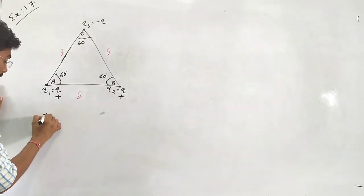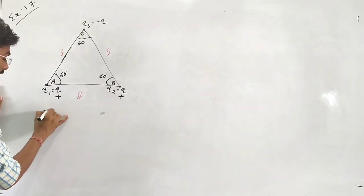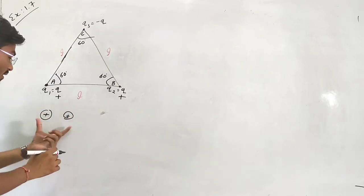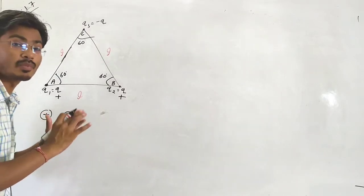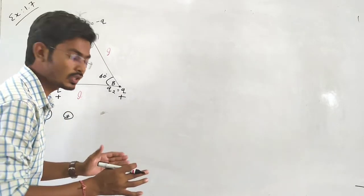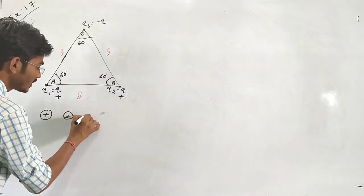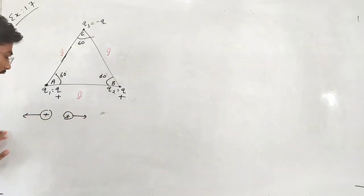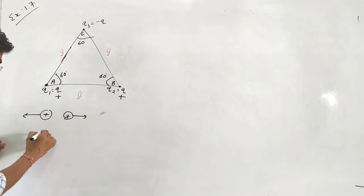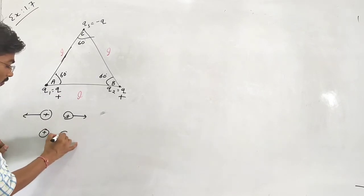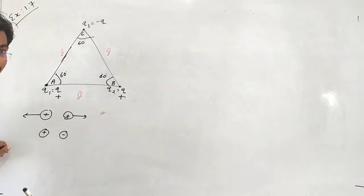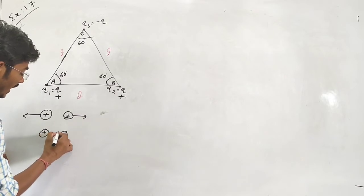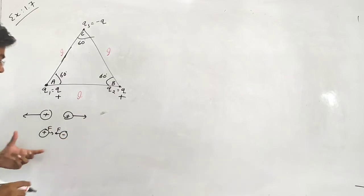If one charge is positive and the other is also positive, that is a repulsive type of force, meaning the force direction is outward. If one is positive and another is negative, the force direction is inward — that is attractive.